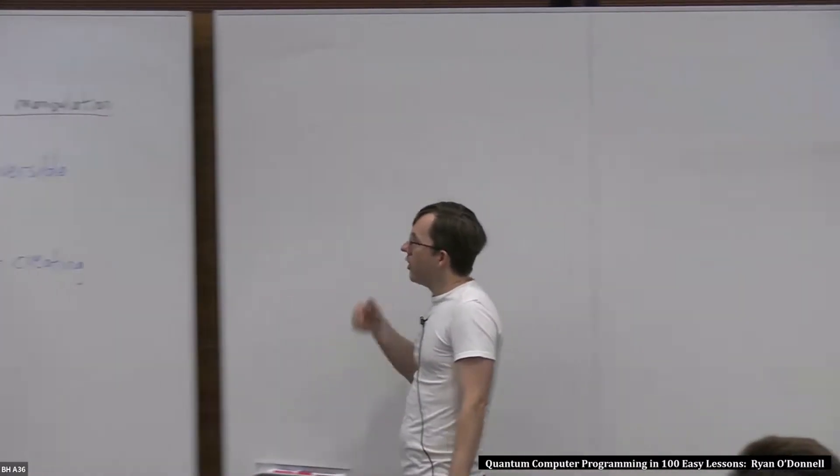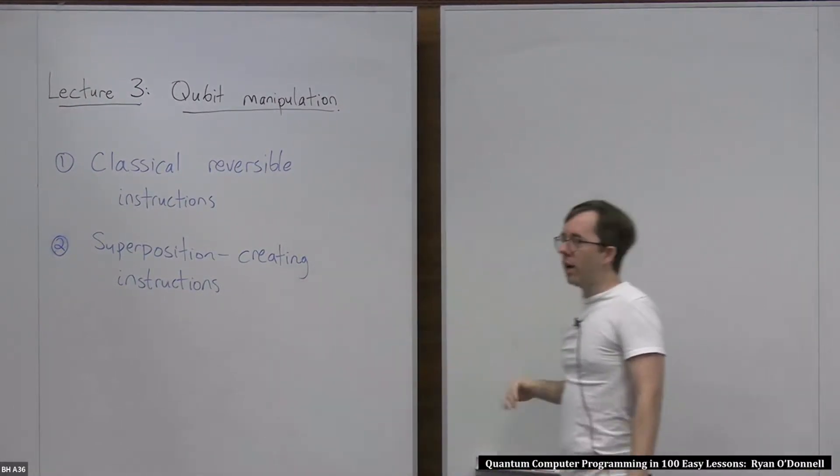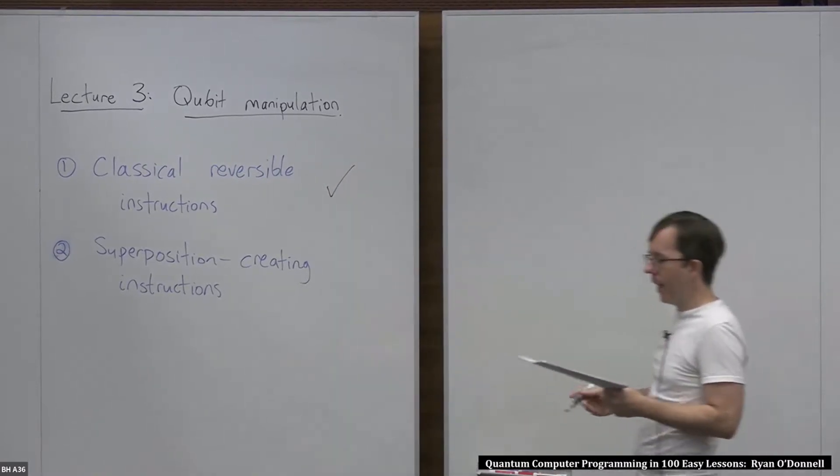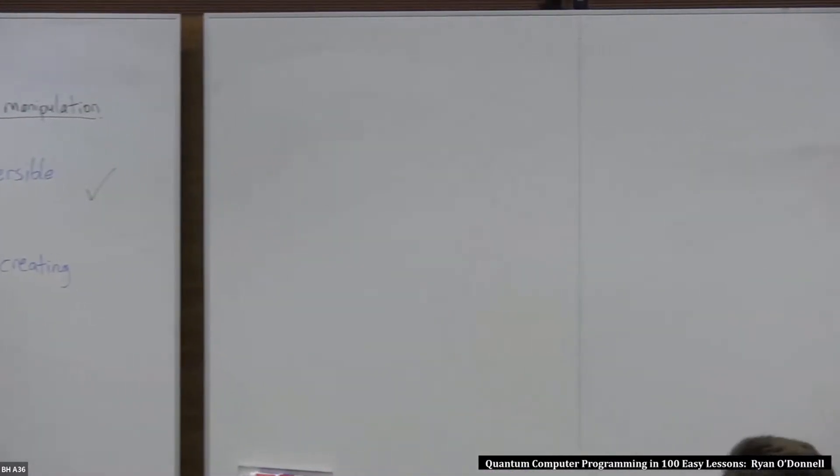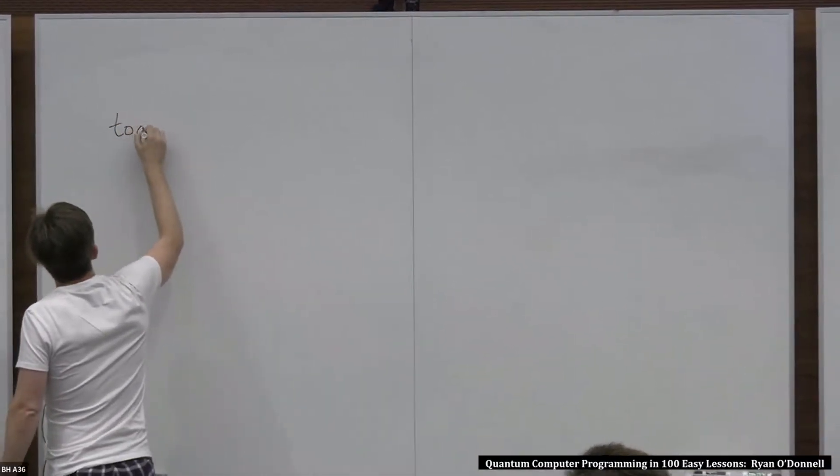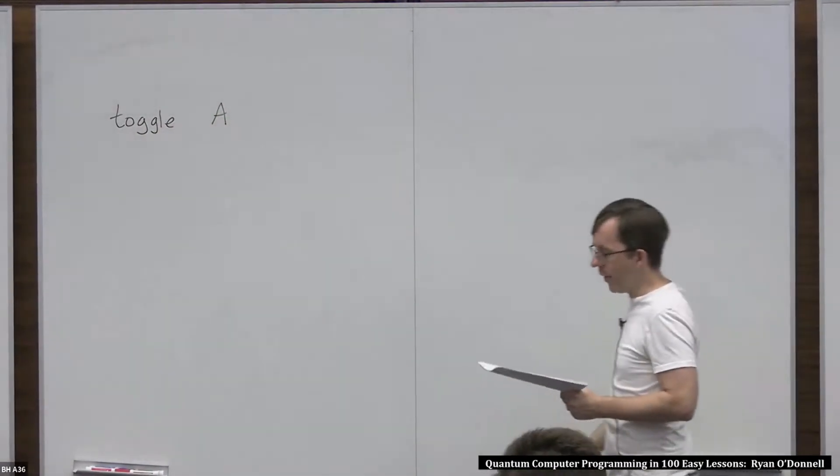Now, among the qubit manipulation instructions, you can arguably also divide them into two categories. I might call these the classical reversible instructions and the superposition creating instructions. I'm going to start with the classical reversible instructions. I'll just write on the board some of the ones in this category that we've seen thus far. In previous lectures, we talked about the toggle instruction which operates on one qubit. If its name is A, we know what that does.